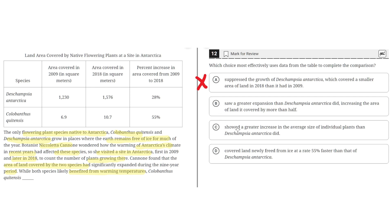Option C says Columbanthus quercensis showed a greater increase in the average size of individual plants than Descampsia Antarctica did. This is incorrect, because the graph compares area covered by these plants, not how these plants change in size. So C is incorrect.